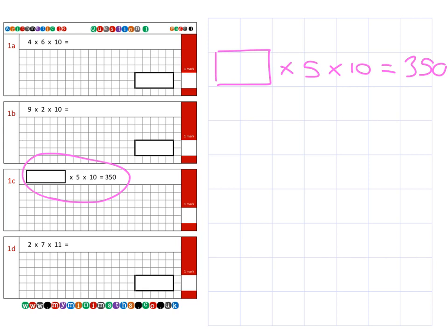So, if I write out the question, we have something times 5 times 10, and that equals 350. Now, the first thing we could do is we could look at these numbers here. So, 5 times 10 is 50, and say, well, 350 divided by 50 would give me 7. And that's my missing number.